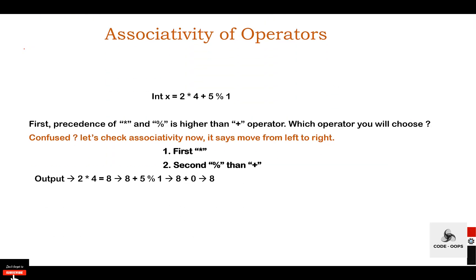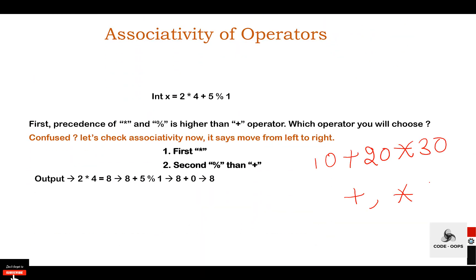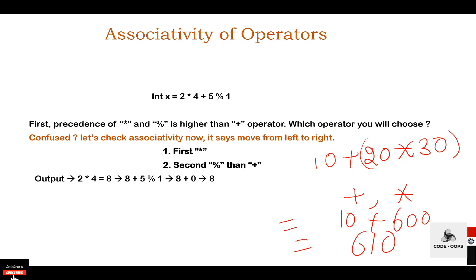For example, the expression 10 + 20 * 30 contains two operators: plus and multiply. According to the precedence table, star has higher precedence than plus, so the first evaluation will be 20 * 30, which equals 600. After evaluating the higher precedence operator, the expression becomes 10 + 600, and the final output is 610.